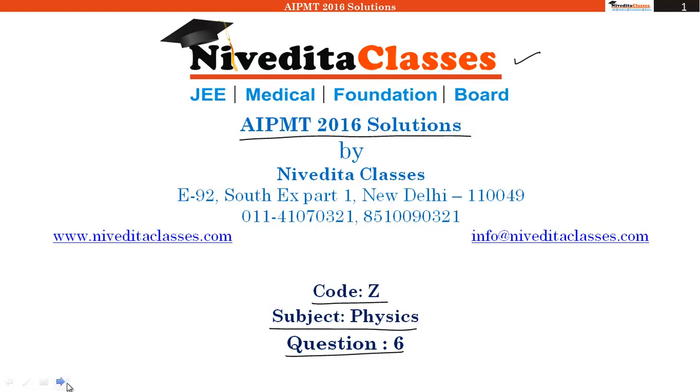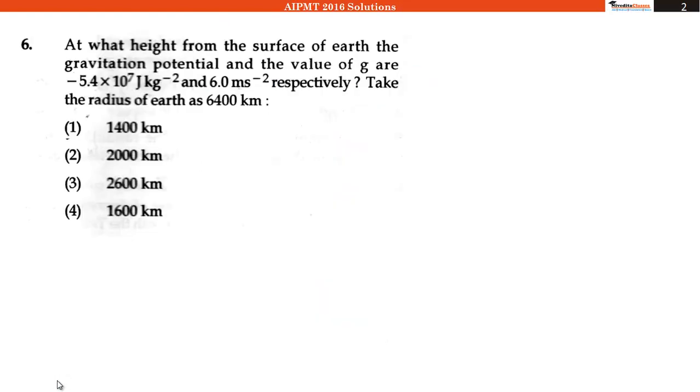What our question says: at what height from the surface of earth are the gravitational potential and the value of g equal to −5.4×10⁷ J kg⁻¹ and 6.0 m s⁻², respectively? Take the radius of earth as 6400 kilometer.